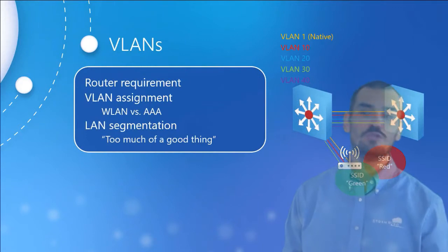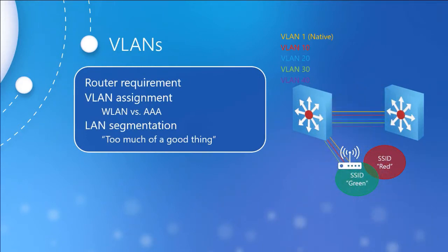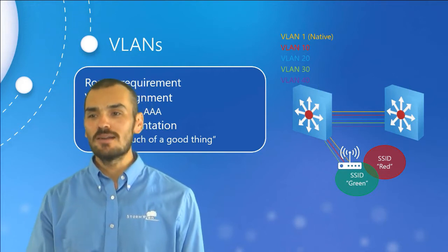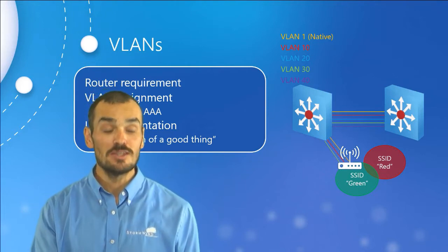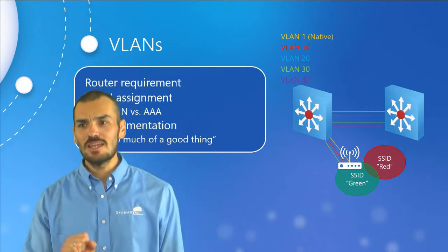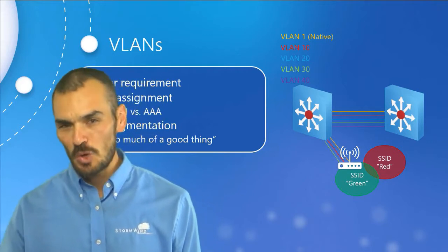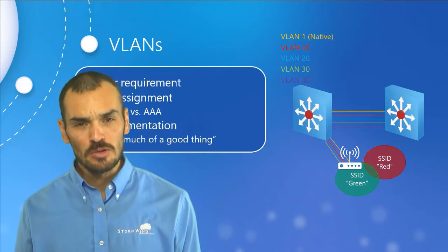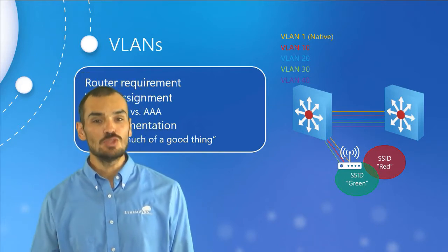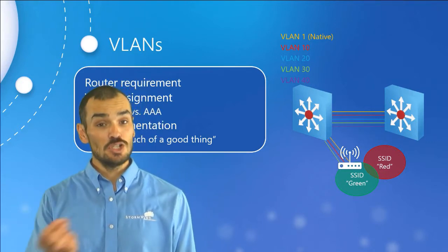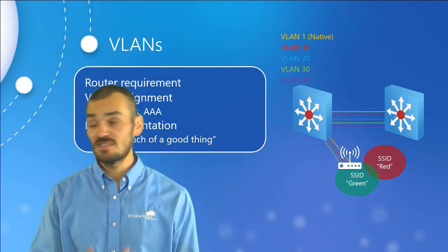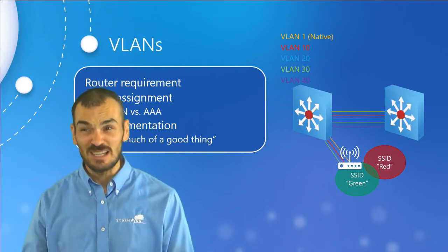On the topic of VLANs: VLANs are used to logically separate traffic on wired networks, and they work in a similar fashion on wireless networks. Although there's no such thing as a wireless VLAN, we'll use that term to simplify the topic. Just like a switch can create multiple VLANs, wireless controllers can create multiple wireless LANs, each with their own SSID, correlation to a wired VLAN, security settings, and QoS settings.